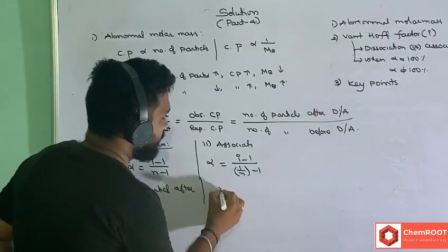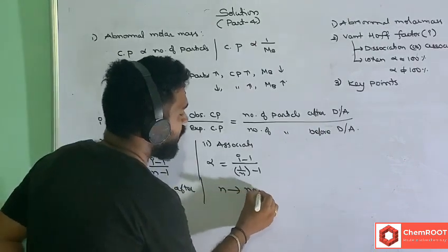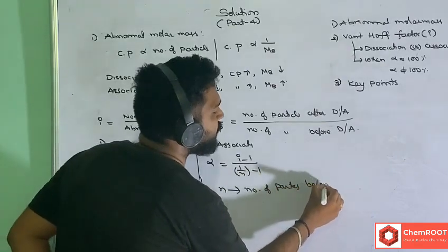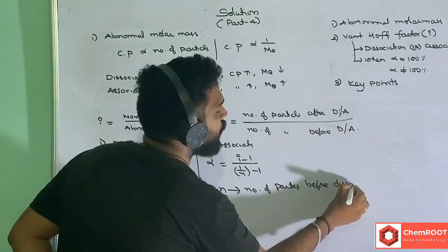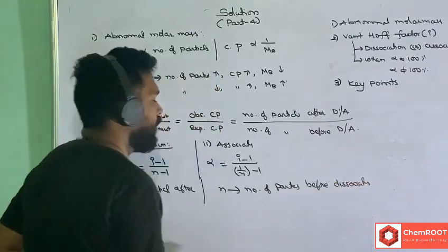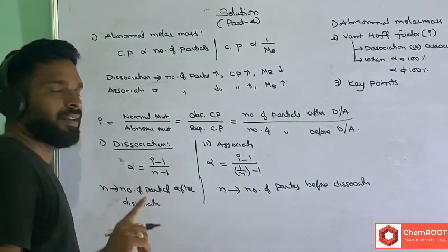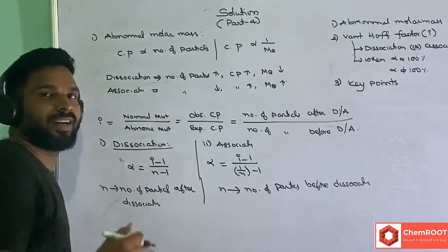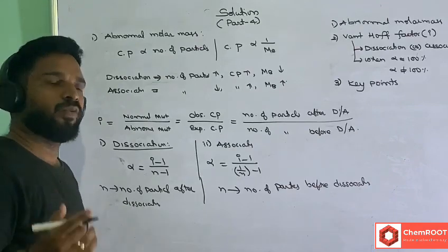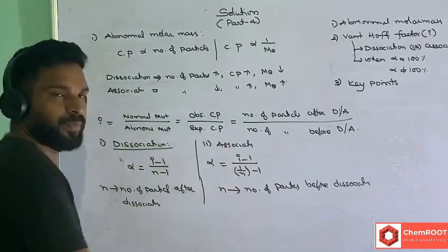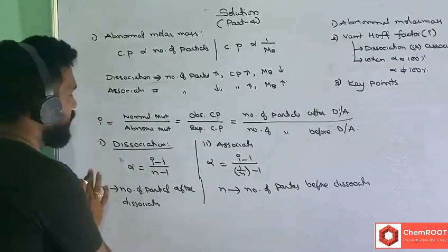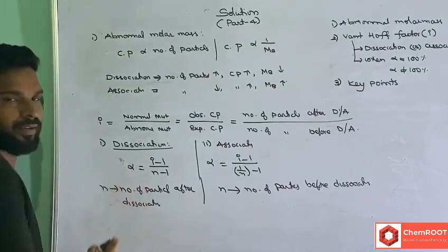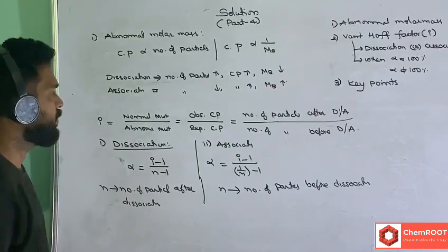For association, n is the number of particles before association. Two particles combining to give one particle means n = 2, so it is forming a dimer. Dimer means 2, trimer means 3, tetramer means 4, and so on. These are the formulas for degree of dissociation/association and Van't Hoff factor.